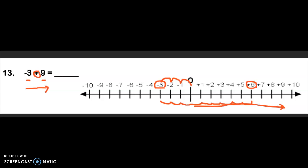Therefore our answer to -3 + 9 would be 6.